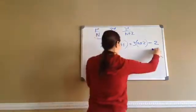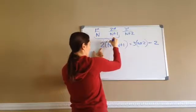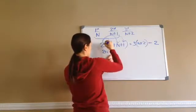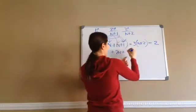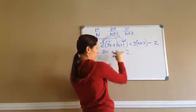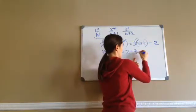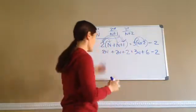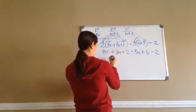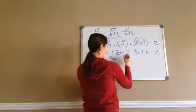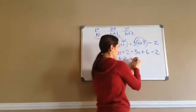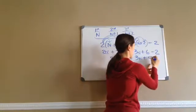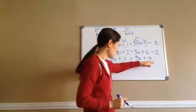So let's go ahead and work this problem. This 2 on the outside means I have to multiply it by everything inside: 2 times n is 2n, plus 2 times n is 2n, plus 2 times 1 is 2. Now let's do the right side: 3 times n is 3n, plus 3 times 2 is 6, and then I put minus 2. Let's combine like terms: 2n plus 2n makes 4n, and I write down plus 2. Then equals: 3n, and 6 minus 2 would be 4.